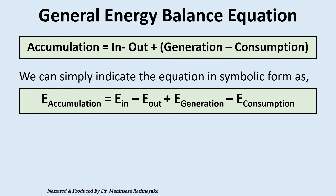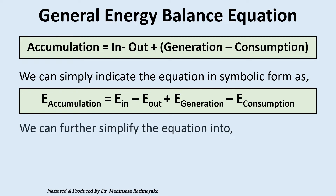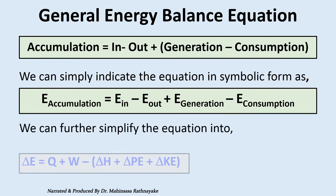Here, capital E indicates energy. We can further simplify the general energy balance equation into: delta E is equal to Q plus W minus delta H minus delta PE minus delta KE.